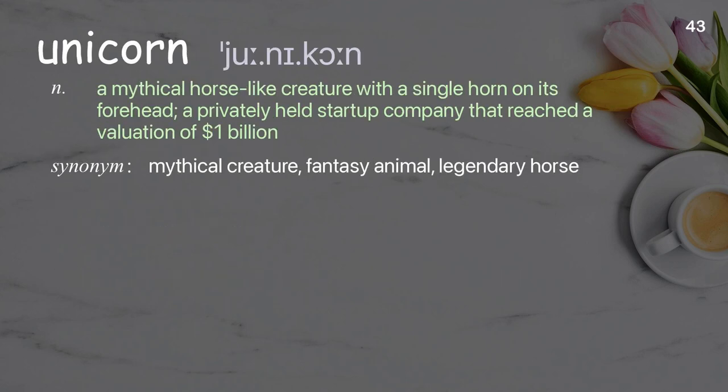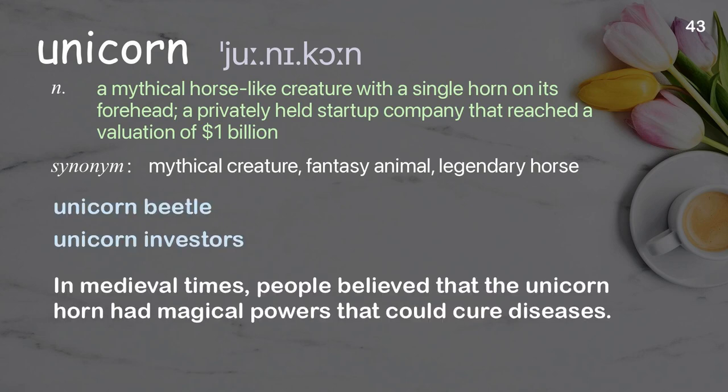Unicorn: a mythical horse-like creature with a single horn on its forehead; also a privately held startup company that has reached a valuation of $1 billion. Examples: unicorn beetle, unicorn investors. In medieval times, people believed that the unicorn horn had magical powers that could cure diseases.